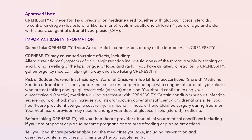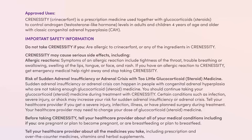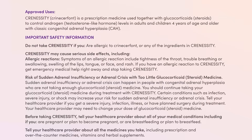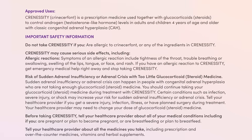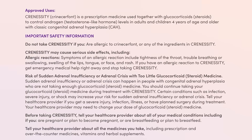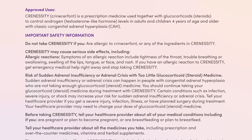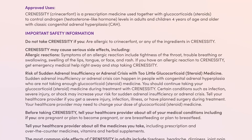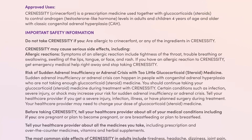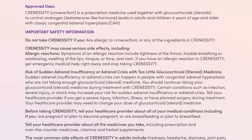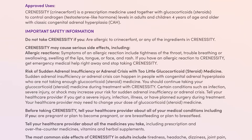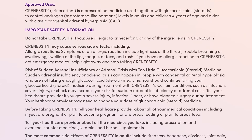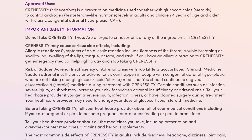Important safety information. Approved uses: Cronicity (crinisofon) is a prescription medicine used together with glucocorticoids (steroids) to control androgen (testosterone-like hormone) levels in adults and children four years of age and older with classic congenital adrenal hyperplasia (CAH).